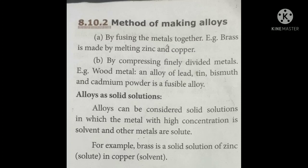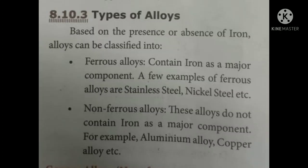Mainly, alloys are in solid solutions. The component present in higher concentration is called the solvent and lesser concentration is called the solute. The classification of types of alloys is based on the presence and absence of iron. If most alloys contain iron, they are called ferrous alloys — iron must be the major component, i.e., the solvent. Examples include nickel steel, stainless steel, etc. Non-ferrous alloys do not contain iron as the major component. For example, alloys of copper — here copper is the major component. Alloys of copper and aluminium are called non-ferrous alloys.